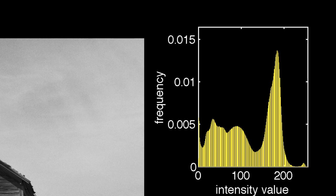On one extreme, a proportion equal to 0 means that no pixels have the corresponding intensity. On the other extreme, a proportion equal to 1 would mean that all pixels have that intensity. As an example, at this location, about 1.3% — 0.0136 — of the pixels have an intensity equal to 185.